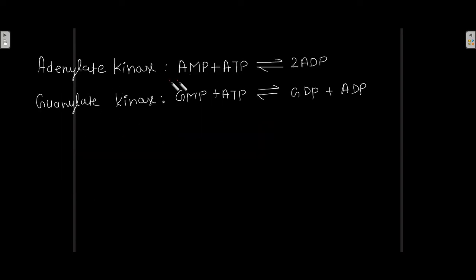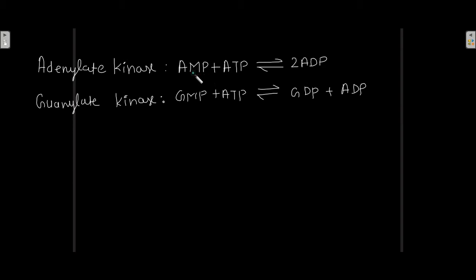This reaction shows the conversion of the monophosphate into the diphosphate. This particular reaction is catalyzed by adenylate kinase. In AMP, there is addition of a phosphate group and the source of that phosphate group is ATP, and that is the reason why AMP is getting converted into ADP.